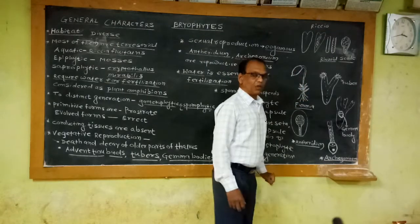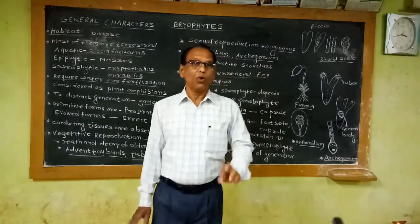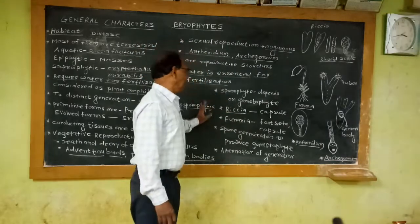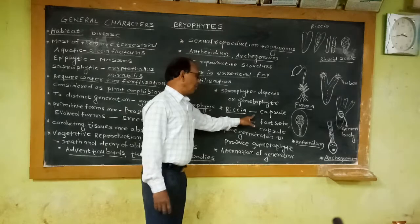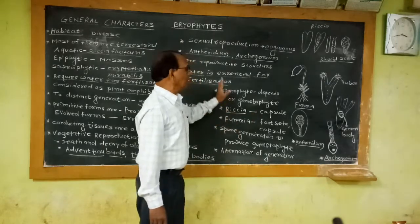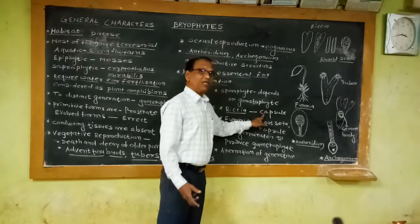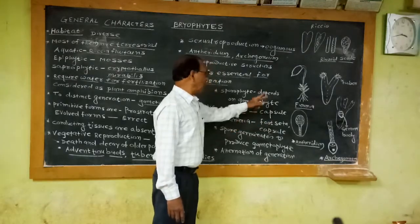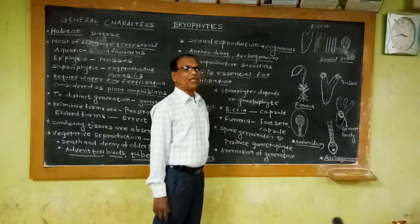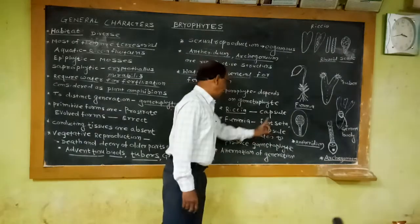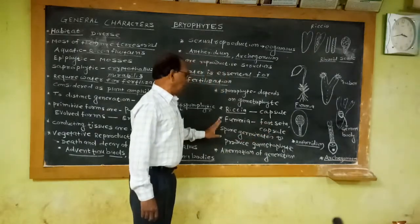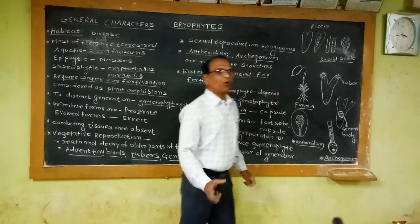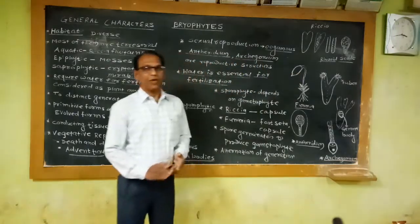If we observe the sporophyte of Funaria, the sporophyte is differentiated into foot, seta, and capsule — three distinct regions. This is the difference between the nature of the sporophyte in lower bryophytes like Riccia, where it is represented by only capsule, versus Funaria, where the sporophyte is differentiated into foot, seta, and capsule. Inside the capsule region, spores are produced after meiotic division.